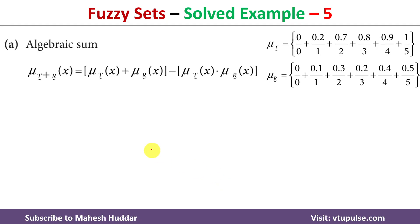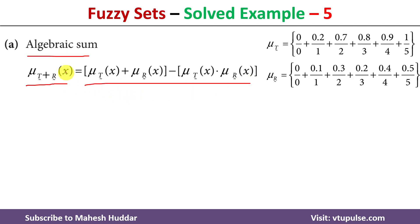We will start with the first one, that is known as algebraic sum. Algebraic sum is denoted with a specific symbol. We can use this formula to calculate the algebraic sum of a particular element x, which is the sum of membership value of x in fuzzy set T and fuzzy set R minus the multiplication of membership value of x in fuzzy set T and R. First we calculate the sum, then the multiplication, and then we take the difference.